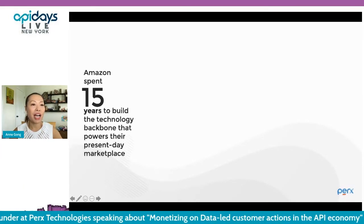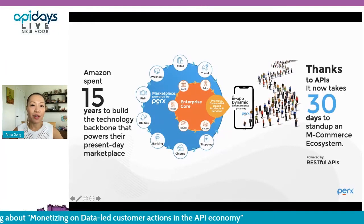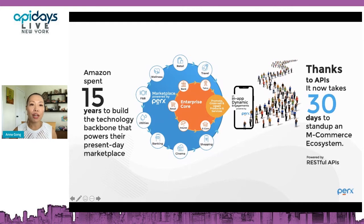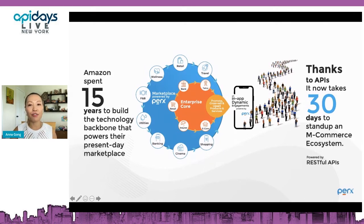Similar to what Amazon built over 15 years, we have a module that allows brands to stand up a merchant commerce ecosystem and create a net-new revenue stream. We take the heavy lifting away — creating a lifestyle ecosystem around your core — and you can onboard high-margin relevant partnerships. It takes just a few weeks to help you stand up a merchant lifestyle ecosystem selling vouchers, brands, and rewards.